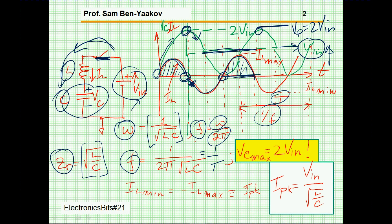The peak value of the inductor current is found from the expression Vin over the square root of L over C, which is the characteristic impedance. And the maximum value of the capacitor voltage is 2Vin.